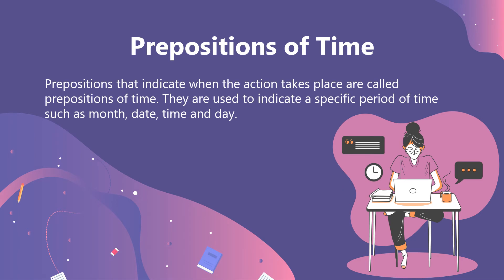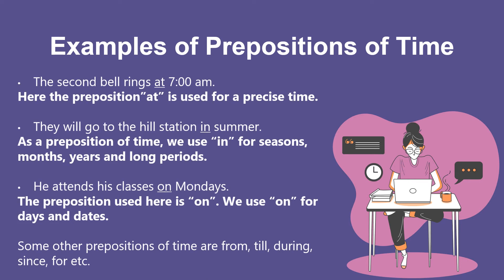Prepositions of time. Prepositions that indicate when the action takes place are called prepositions of time. They are used to indicate a specific period of time such as month, date, time, and day. Example: 'The second bell rings at 7 am.' Here the preposition 'at' is used for a precise time. They will go to the hill station in summer. As a preposition of time, we use 'in' for seasons, months, years, and long periods.